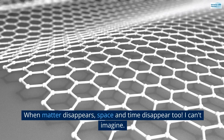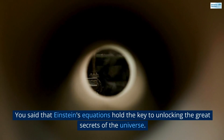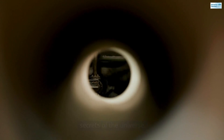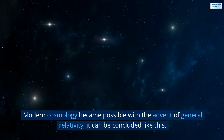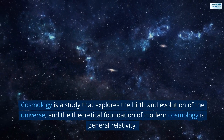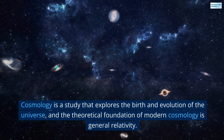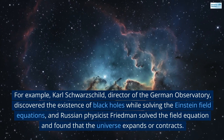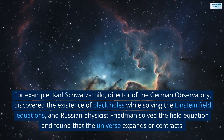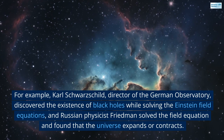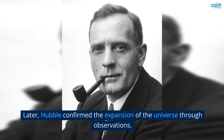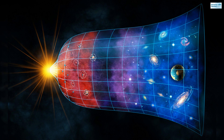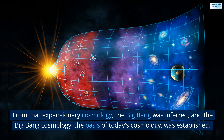Q15. When matter disappears, space and time disappear too — I can't imagine. You said that Einstein's equations hold the key to unlocking the great secrets of the universe. Could you please introduce what they are specifically? Modern cosmology became possible with the advent of general relativity. Cosmology is a study that explores the birth and evolution of the universe, and the theoretical foundation of modern cosmology is general relativity. For example, Karl Schwarzschild discovered the existence of black holes while solving the Einstein field equations, and Russian physicist Friedman solved the field equation and found that the universe expands or contracts. Later, Hubble confirmed the expansion of the universe through observations. From that expansionary cosmology, the Big Bang was inferred, and the Big Bang cosmology — the basis of today's cosmology — was established.